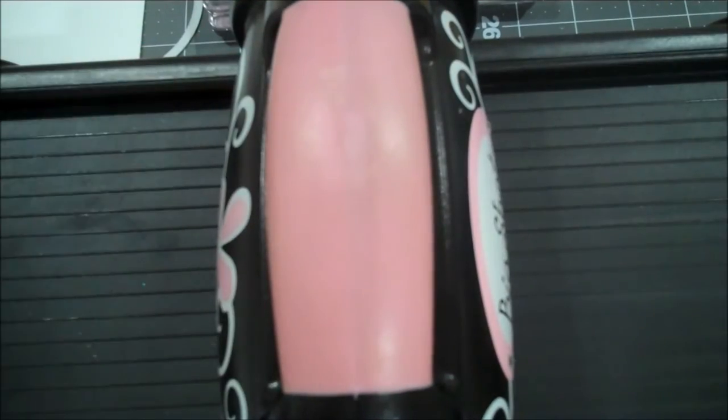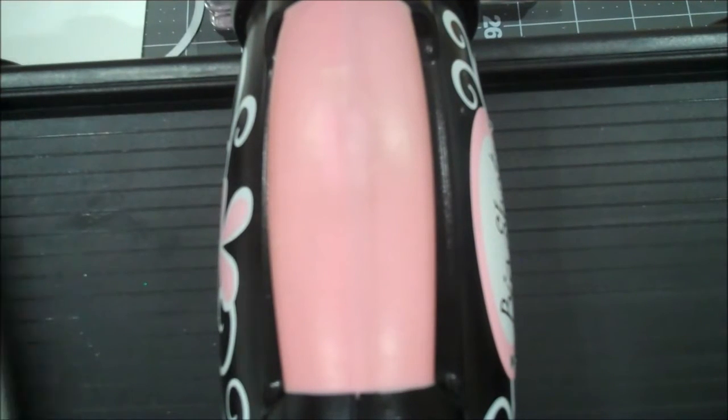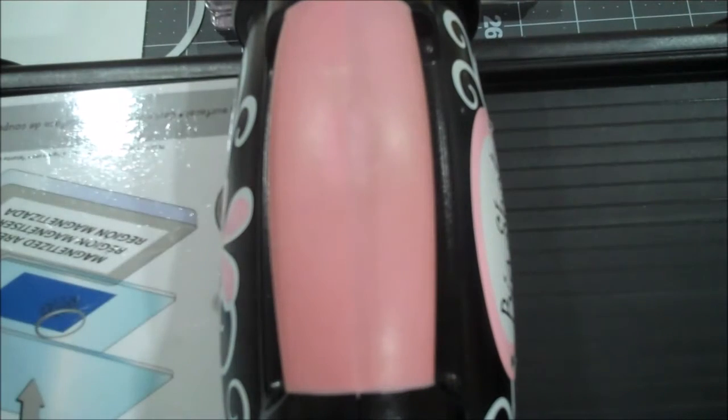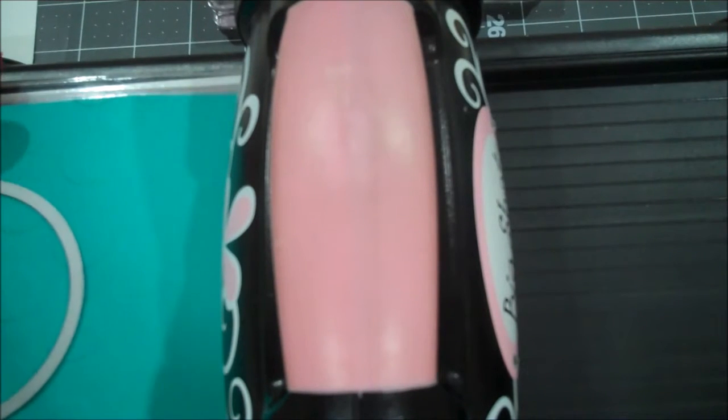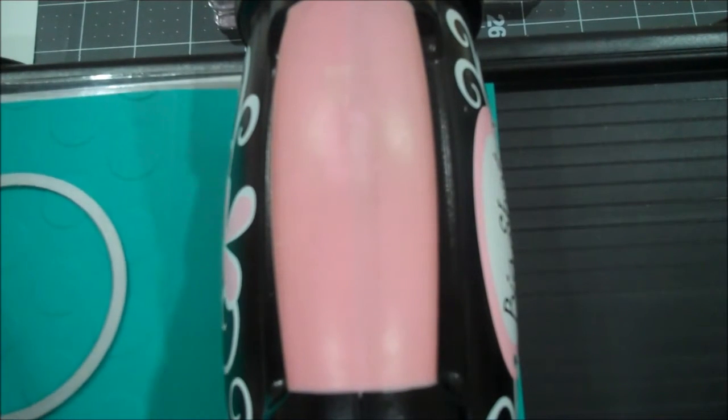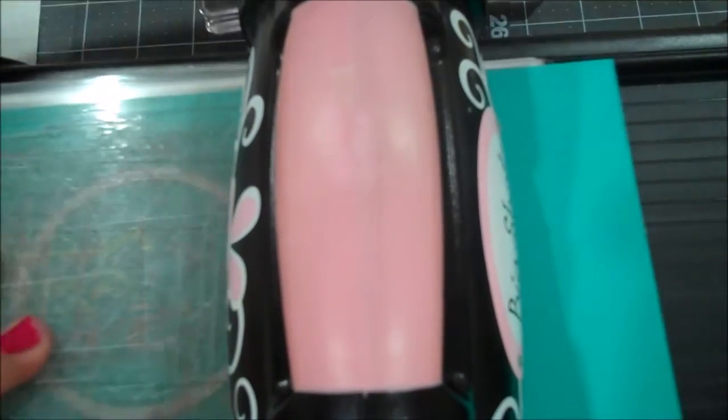We're going to use the Big Shot one more time. So let me just switch platforms. I am bringing in my magnetic platform and I am using one of the circle framelits. And this one looks like about 3 inches and I am just going to line that up in the center as best as I can. And if you want to use a little piece of washi tape you could. And we're going to cut out our circle. So let me roll that through.